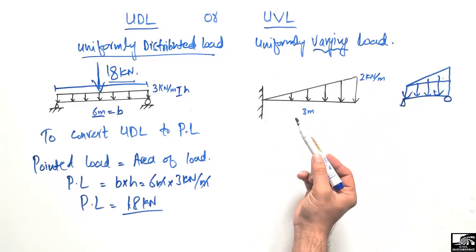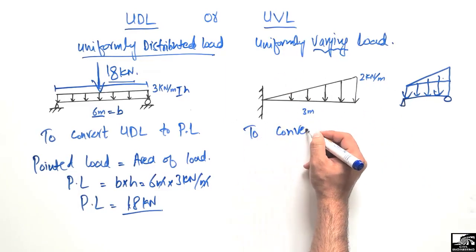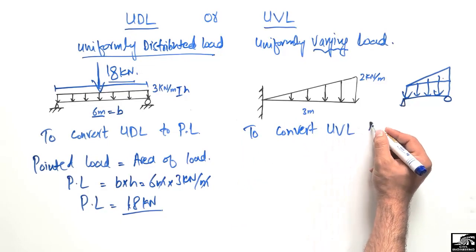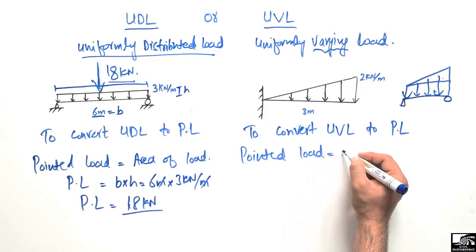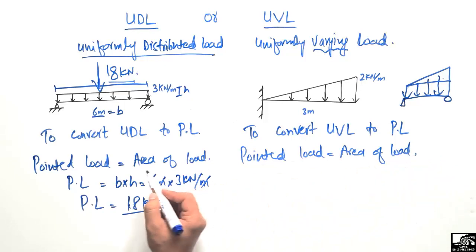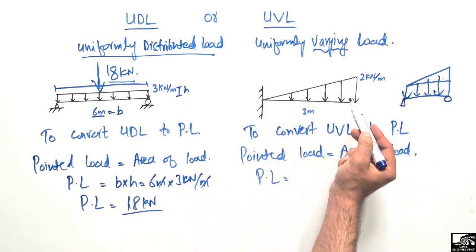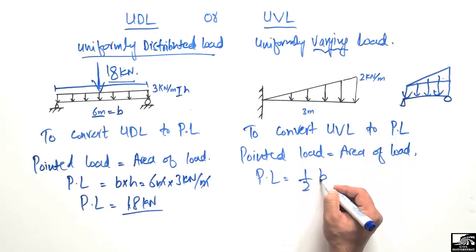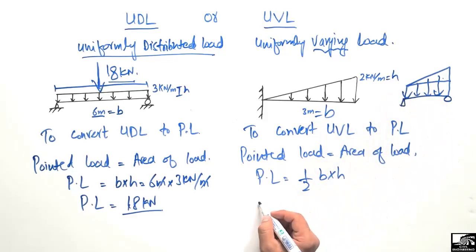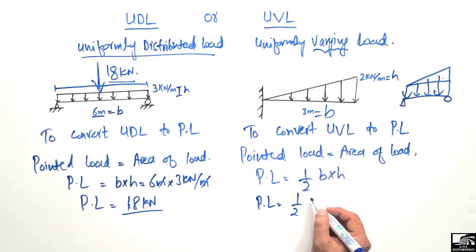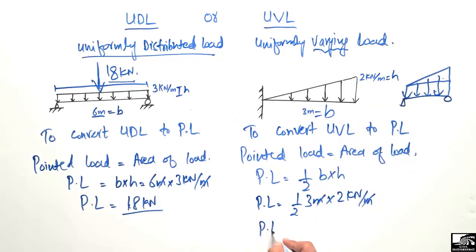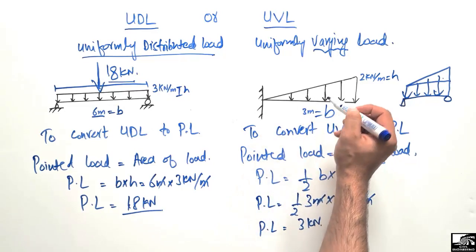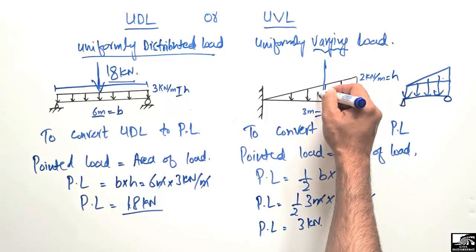For a uniformly varying load, we similarly use the formula: pointed load PL equals the area of the load. Since this is a triangular load, the triangle area is half base times height. Here, base is 3 meters and height is 2 kN per meter. So PL = ½ × 3 × 2 = 3 kN.